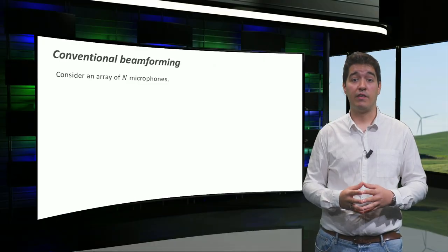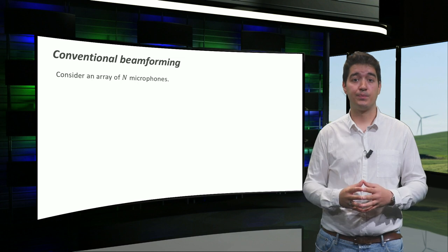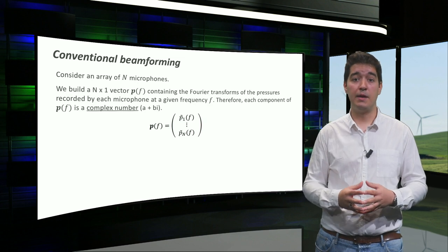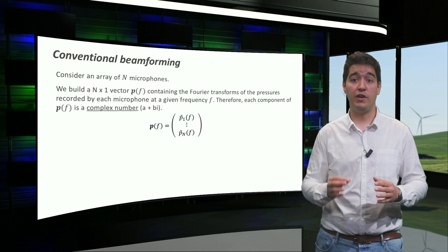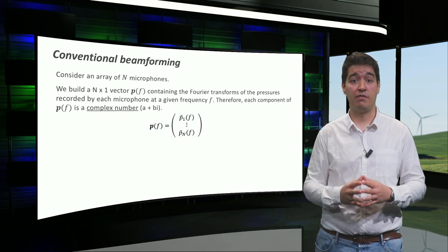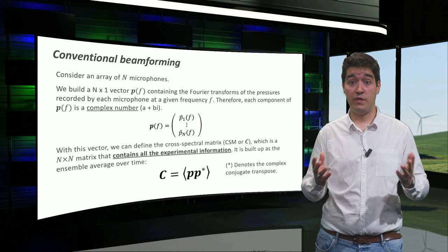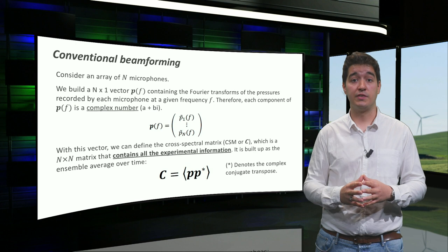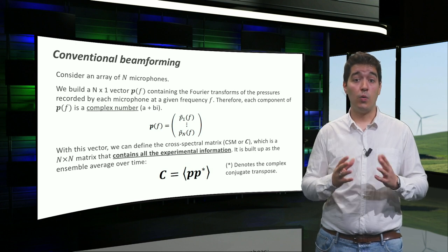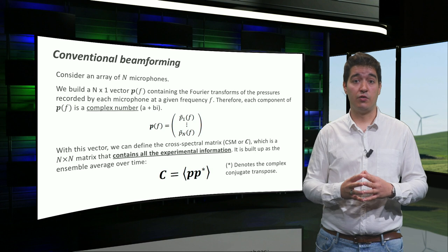Imagine now that we have an array with N microphones. We build an N by 1 vector P containing the Fourier transforms of the pressures of each microphone at the given frequency F. With this vector, we can define the cross-spectral matrix C, which contains the experimental information. We calculate it as the ensemble average over time.